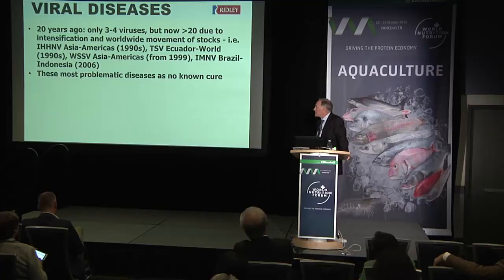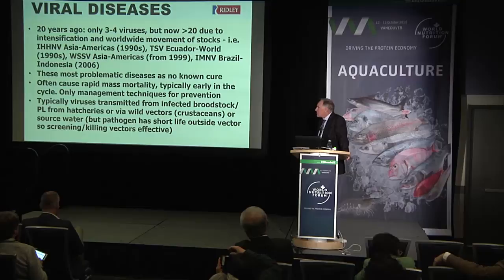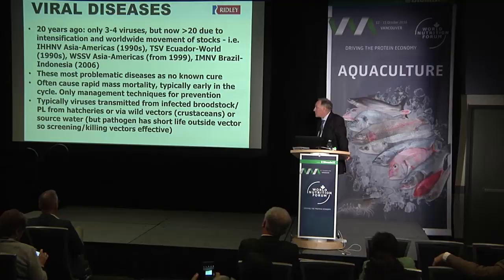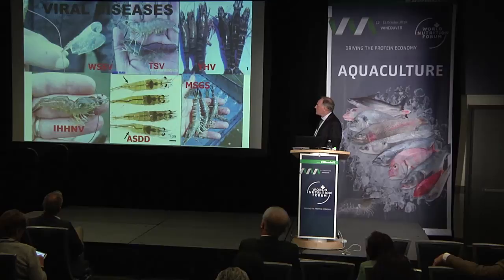Viruses are often transferred from infected broodstock taken from ponds and transmitted through the hatchery into post larvae at new sites. They rely on transmission through wild vectors, typically crustaceans, or through water. But many have a very short life outside of crustacean host organisms — so if you can get rid of those vectors, you can help control the transmission of disease.